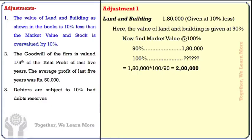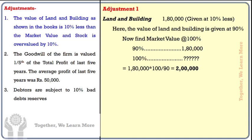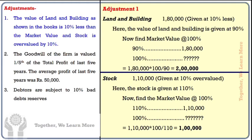Adjustment number 1 — Land and Building: The value of land and building as shown in the books is 10% less than market value. Land and building in books is 1,80,000, which is at 90%. To find the market value at 100%, we calculate: 1,80,000 ÷ 90 × 100 = 2,00,000. So the market value of land and building is Rs. 2 lakh. For stock: Stock is overvalued by 10%, so 1,10,000 is at 110%. Therefore, the market value of stock is Rs. 1 lakh.